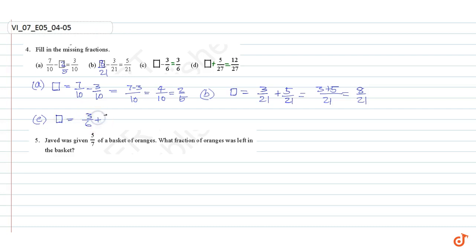Part C: missing number equal to 3 by 6 plus 3 by 6 equal to 3 plus 3 divided by 6 equal to 6 by 6 equal to 1. So here it is 1.